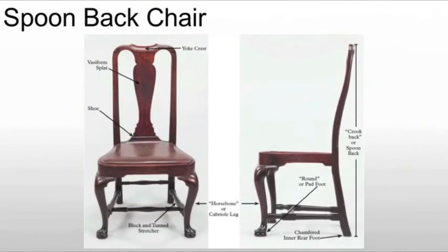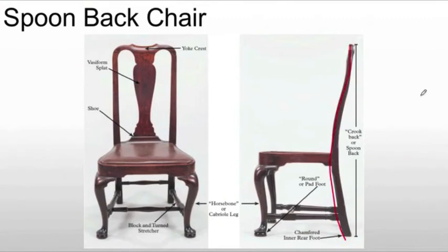We will also see the spoon back chair. The spoon back can take a number of different forms, but generally we see a curved form to the back — something we haven't seen much of in the past. It makes for a more comfortable chair that more accurately depicts the curvature of the human spine. There are vertical compound curves similar to that of a spoon, elaborately carved crest rails, and a carved center splat extending from the crest rail to the stay rail near the seat. Chair seats are typically wider in the front than in the back.